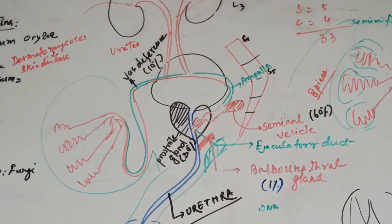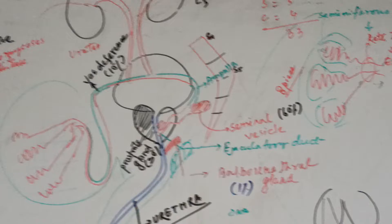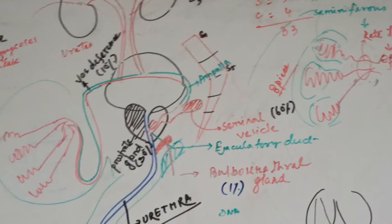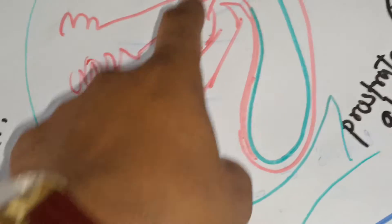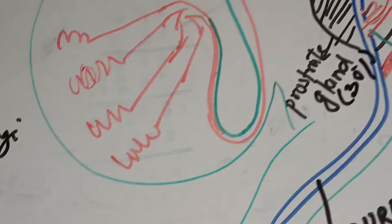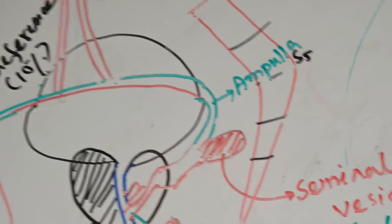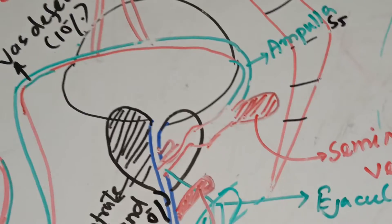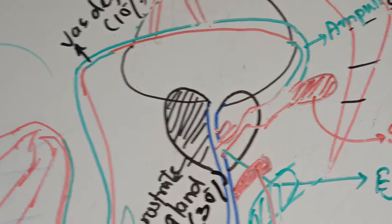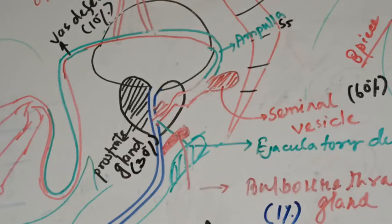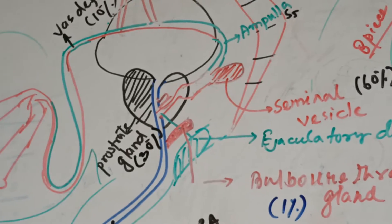You can see the scrotum sac has seminiferous tubules, and the seminiferous tubules' lobes come into this portion called rete testis. From the rete testis, this structure, the vas deferens, is moving out and you can see it going across with the efferent ductules forming the ampulla moving towards the urethra.